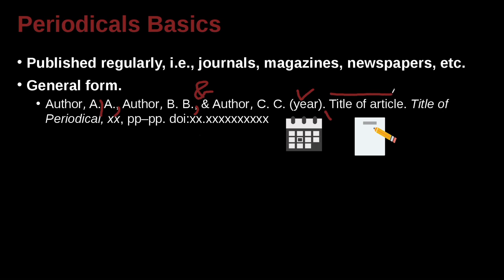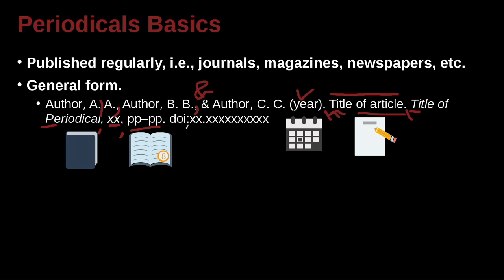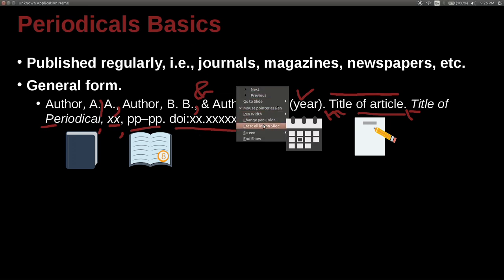Then you're going to have the title of the article — the name of the actual paper you're citing — and the capitalization: the first word is capital, but the other words are lowercase. Then you have a period, and then you're going to have the title of the periodical, capitalized just like the journal name is. Then a comma, the number and issue of the journal, a comma, and then the pages — from what page to what page. And then you're going to have a DOI document identifier if you have one, and these days we often do. So that's the general form.